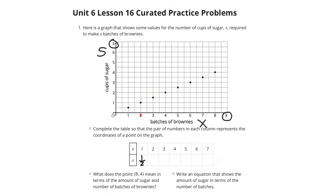At 2 batches of brownies, that looks like 1 cup. For 3, looks like 1 and a half. For 4, looks like 2. For 5, looks like 2 and a half. For 6, that would be 3. And lastly, for 7, looks like 3 and a half.